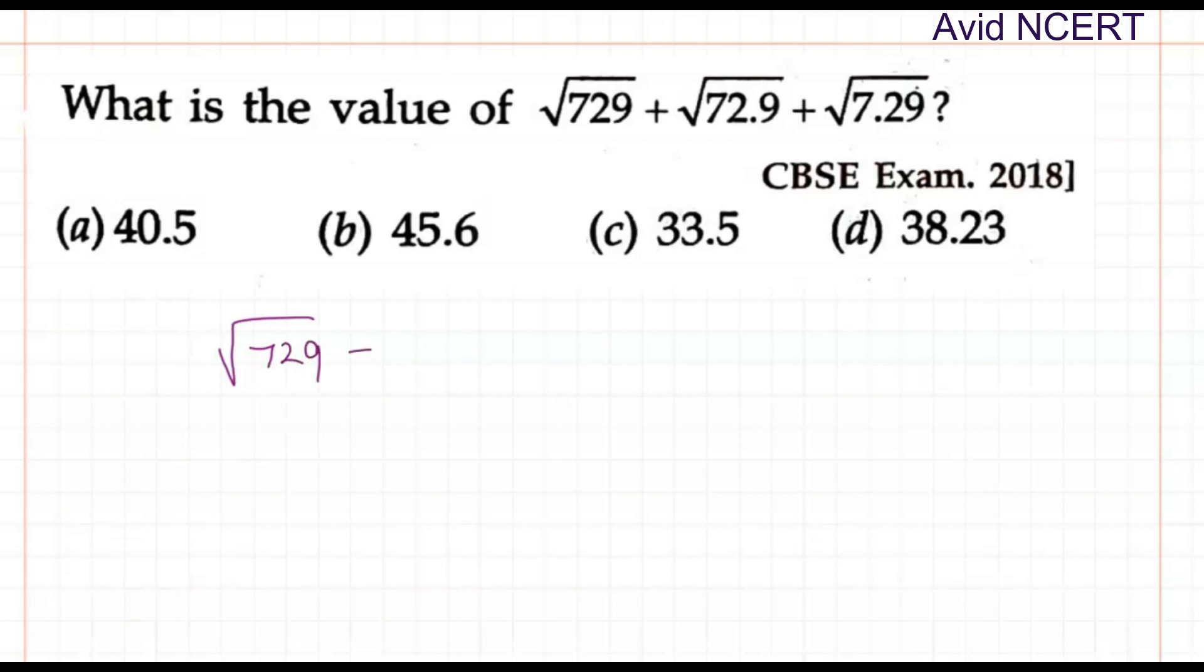So square root of 729 plus writing 72.9 as a fraction. So it is 729 divided by - to write it as a fraction, the trick here is to check the number of decimal places. The decimal place here is 1 which means divided by 10. So that is 10 plus square root of. Same thing goes here. Check the number of decimal places. So it is 2. So we have to divide it by 2 zeros which is 729 divided by 100.